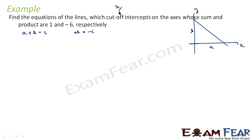If we know A and B, that is the X and Y intercepts, we can find the equation in this form. So if we can find the value of A and B, we can directly write the equation. We just have to find the value of A and B.